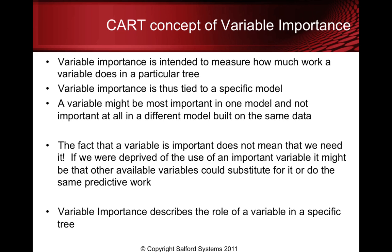The CART concept of variable importance is intended to measure how much work a variable does in a particular tree. Variable importance is tied to a specific model. A variable might be most important in one model and not important at all in a different but rather similar model built on the same data. The fact that a variable is important also does not mean that we need it — other available variables could substitute for it, and occasionally might even do a better job.